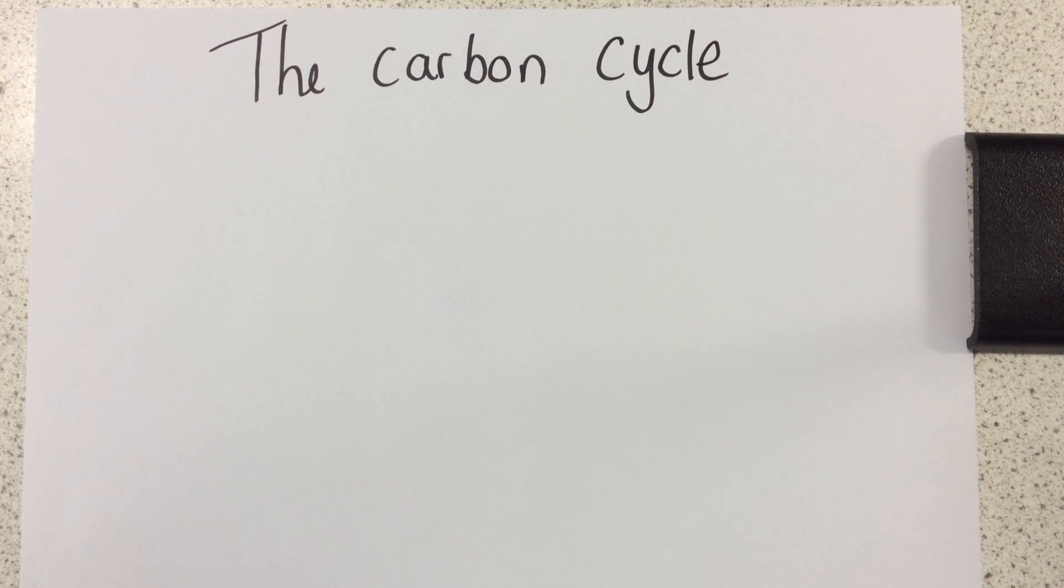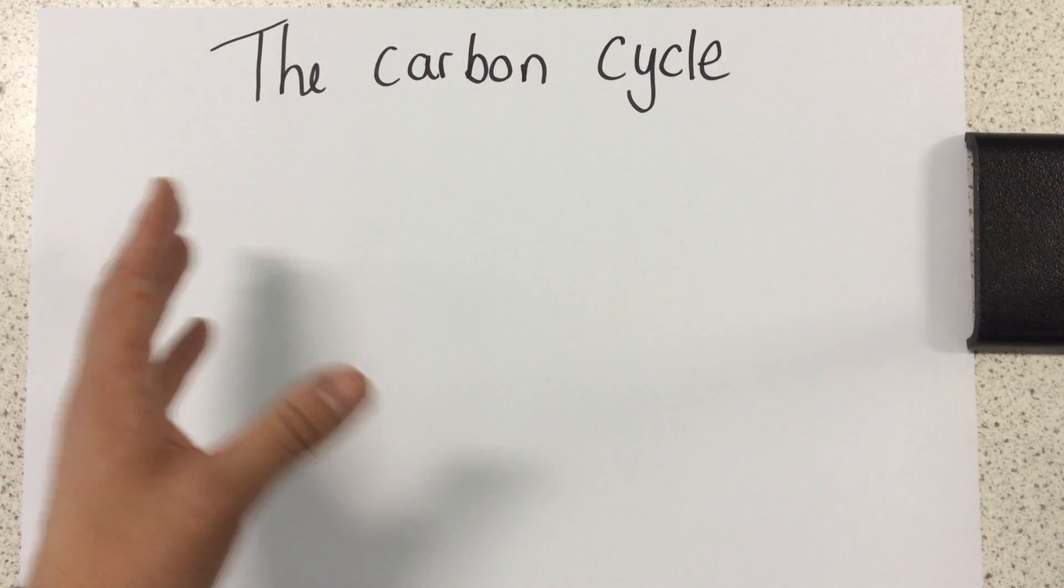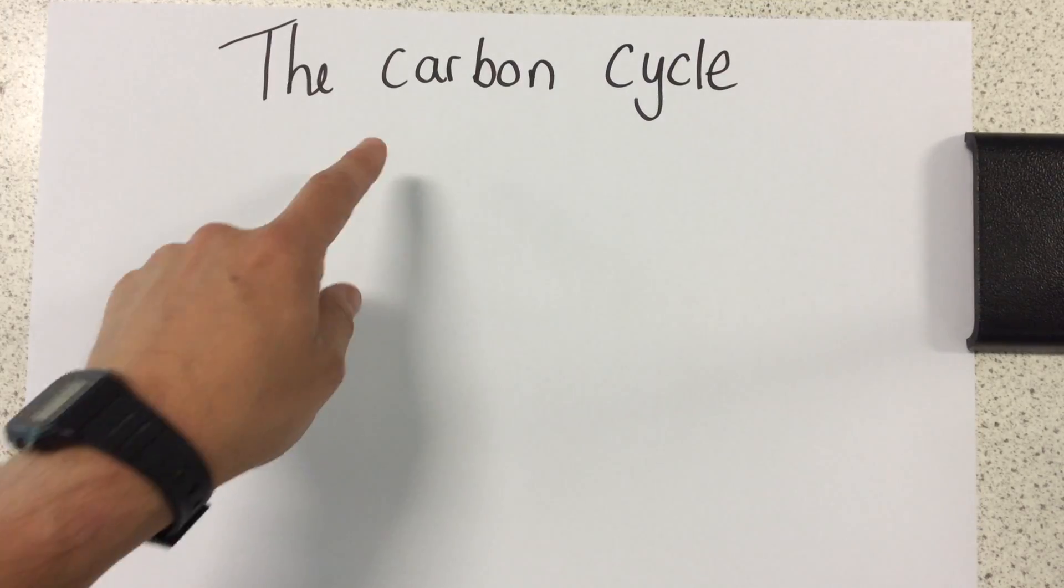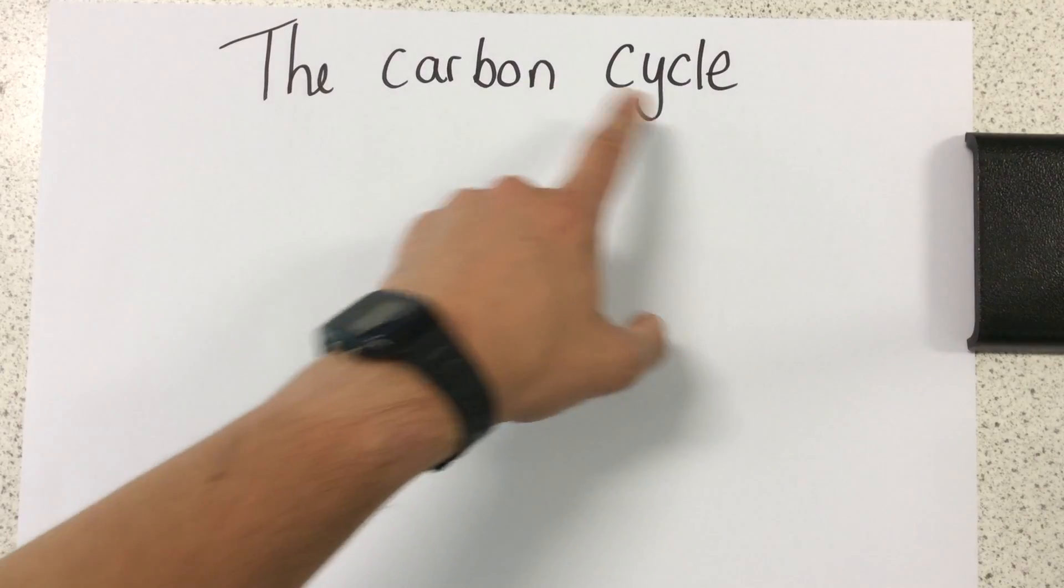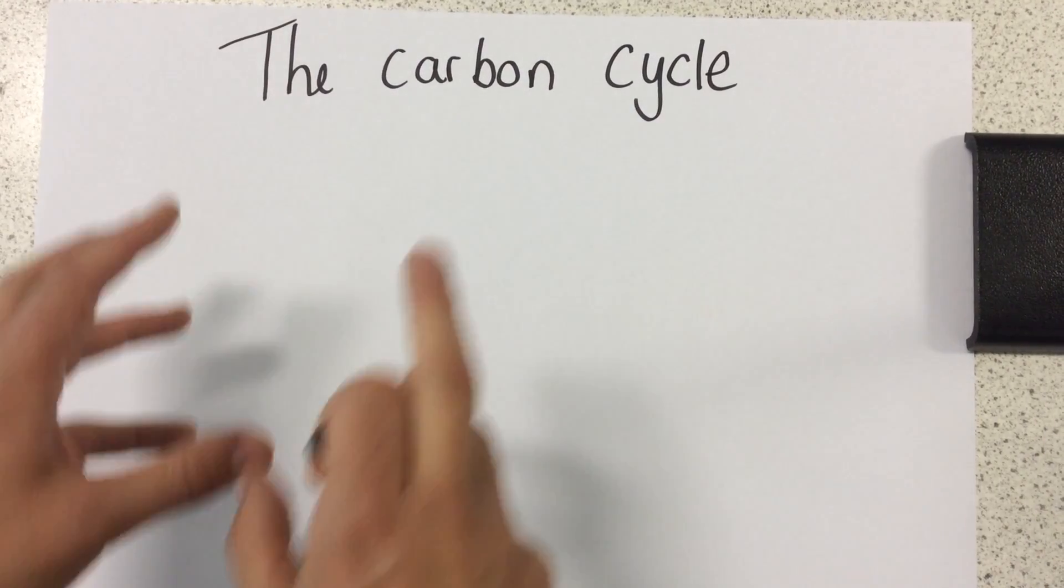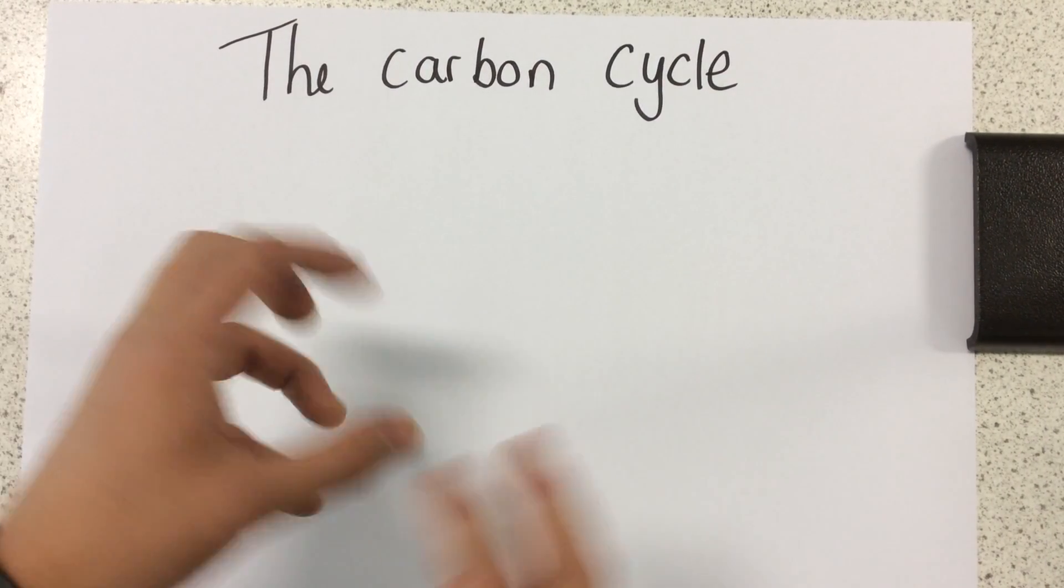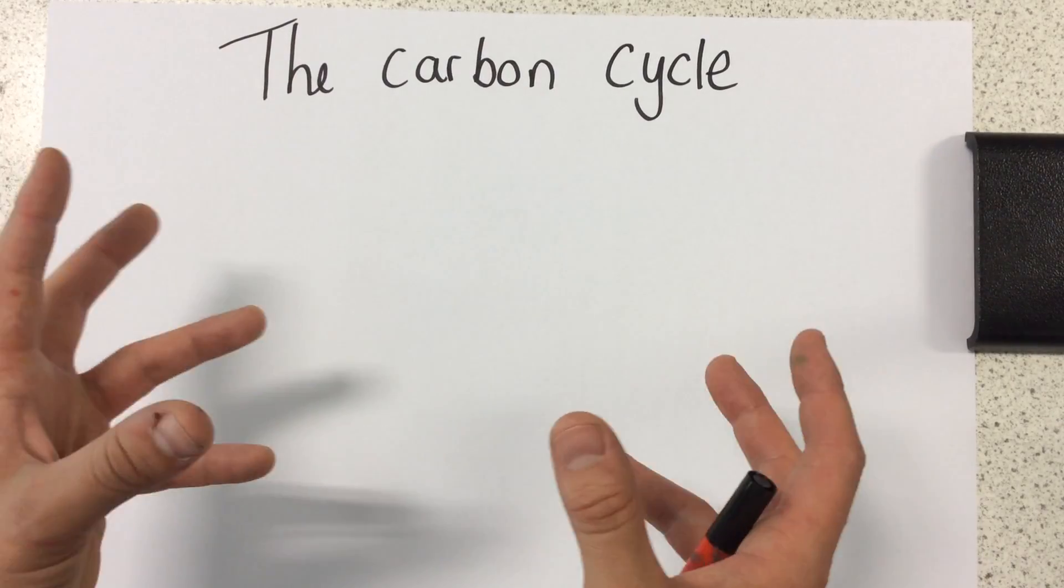Hello, I'm going to talk to you today about the carbon cycle. What the carbon cycle is, is basically carbon is never created or destroyed on Earth. It's just moved from one place to another. So what the carbon cycle shows is how carbon moves throughout different stores and different places around the Earth.